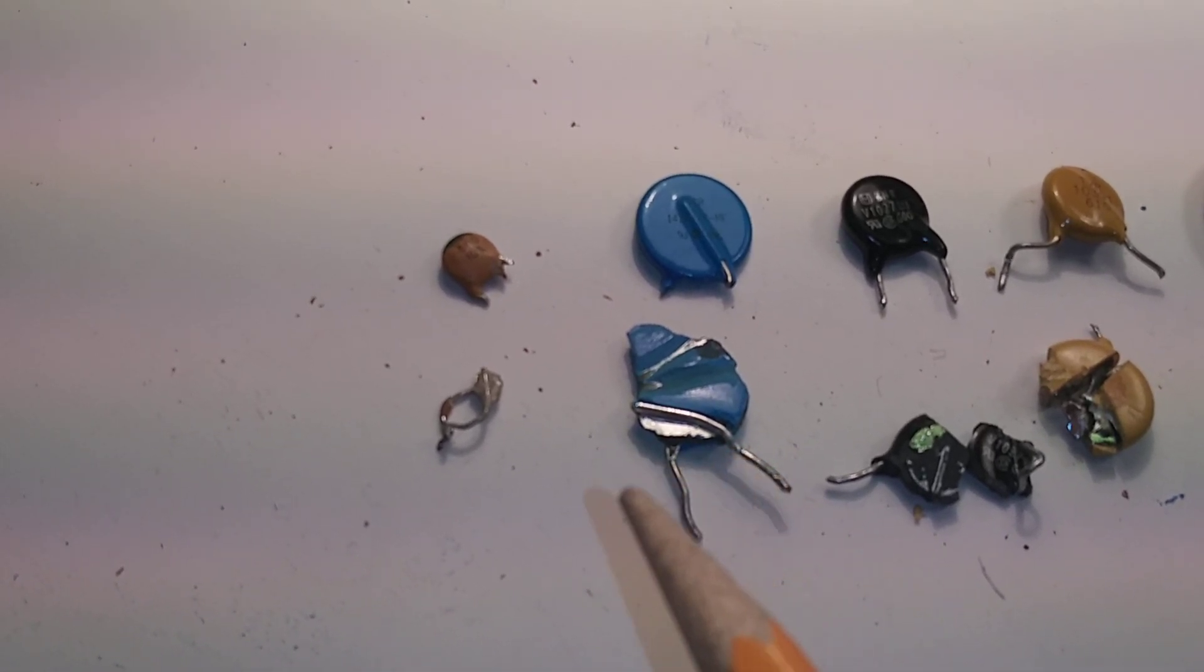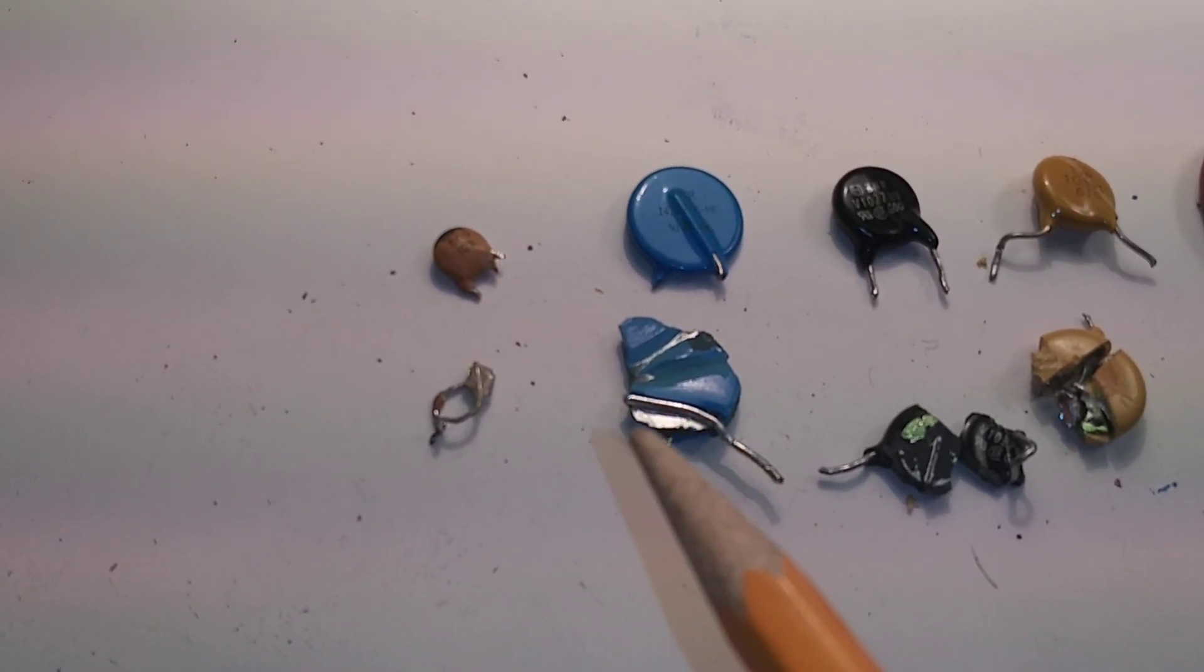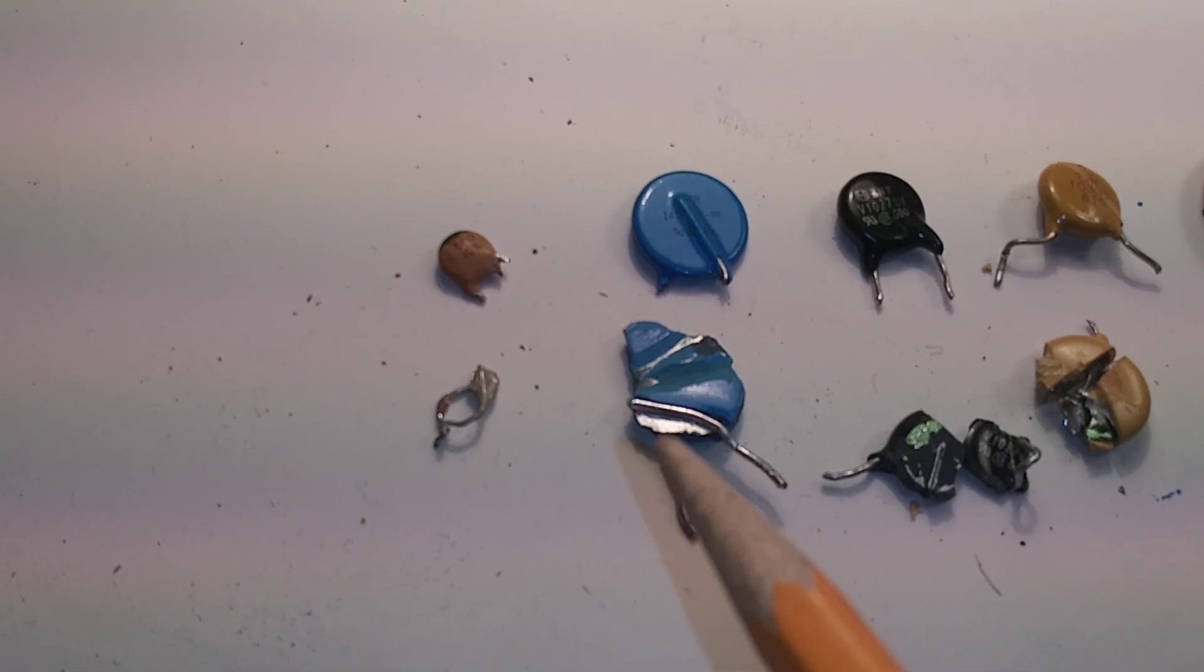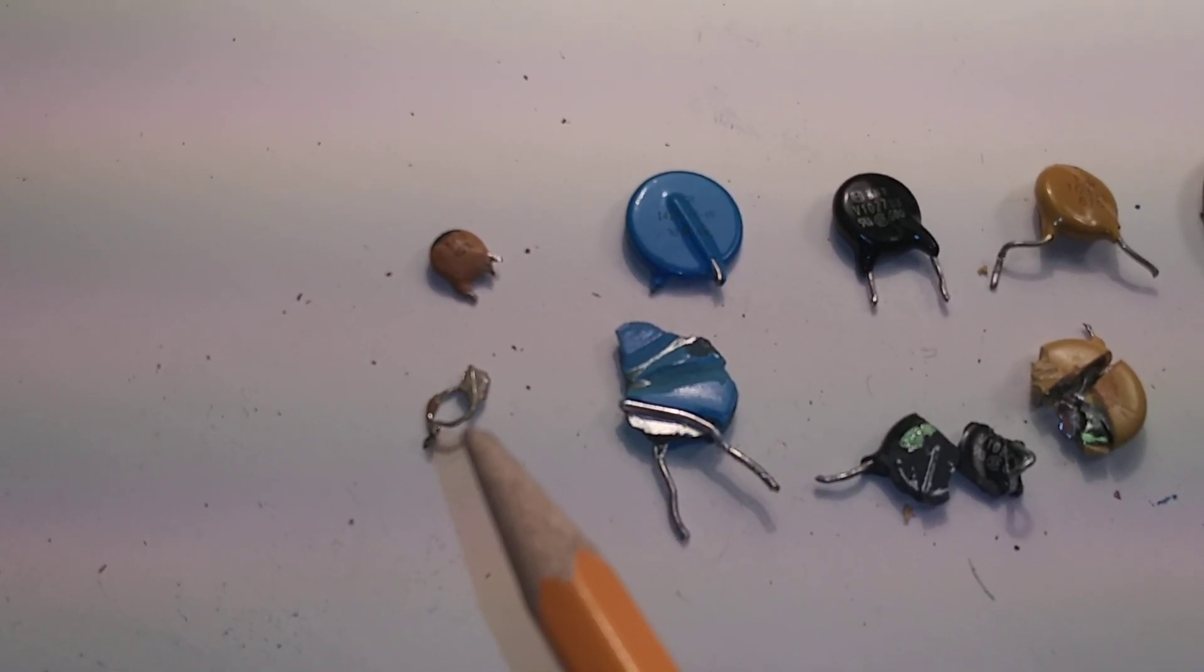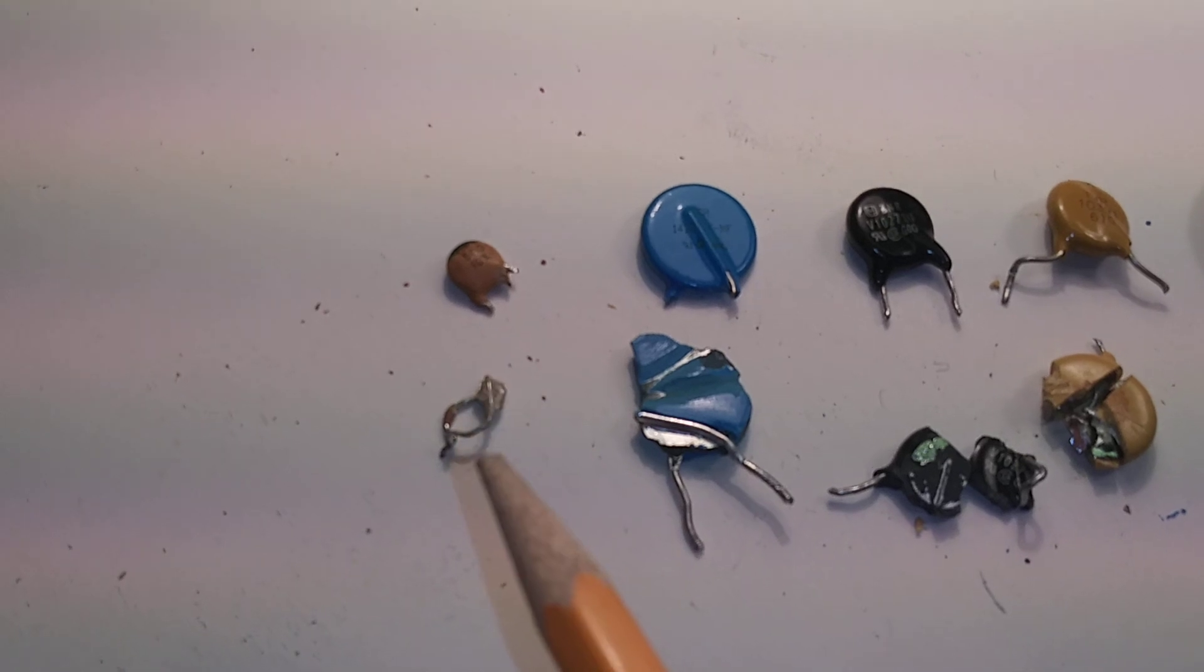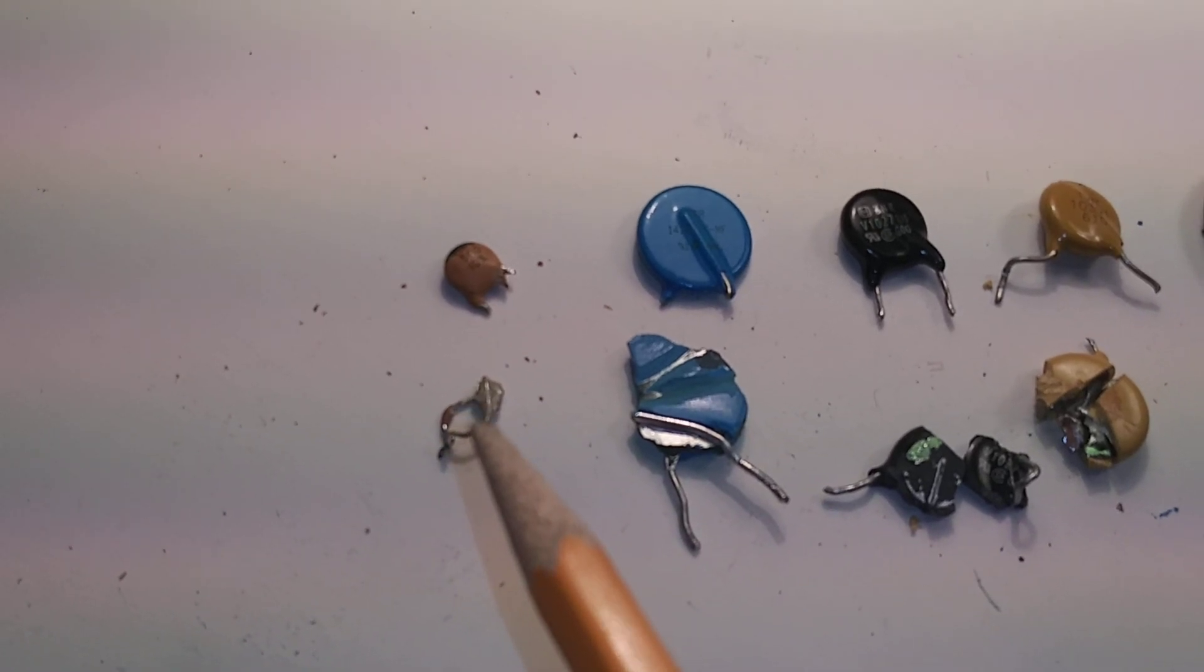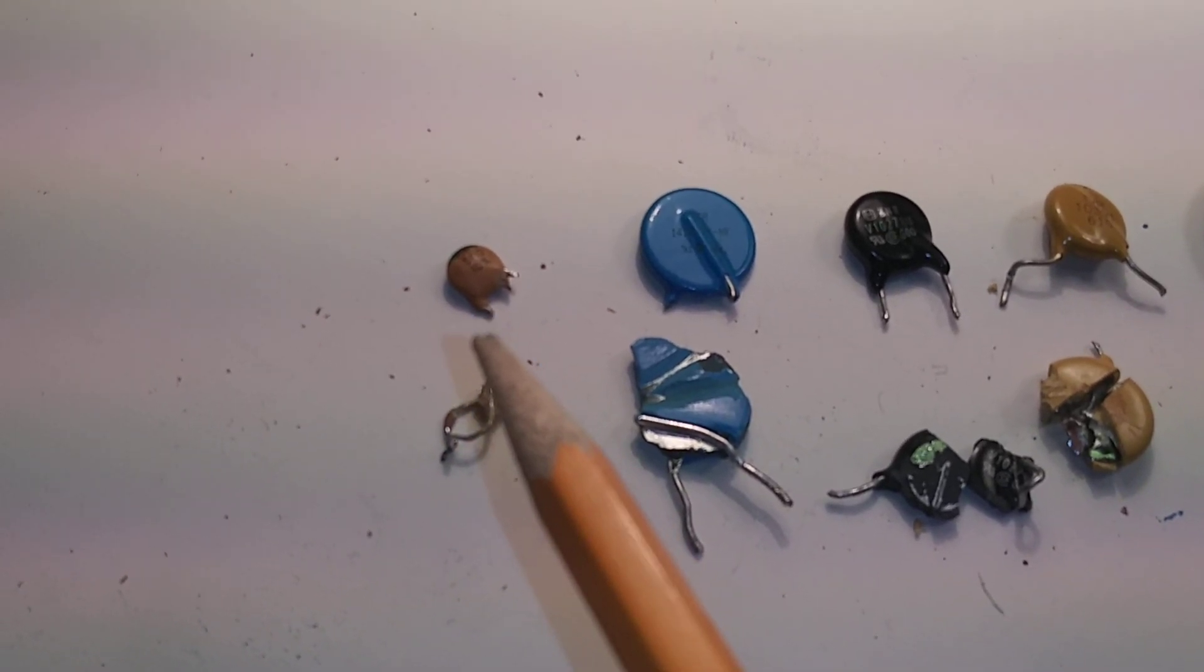You've got the silver coating on the actual ceramic disc, and then the electrode coming out. Once again, this is a smaller 500 picofarad capacitor—not a lot of surface area because it's small in capacitance.